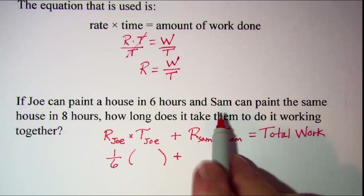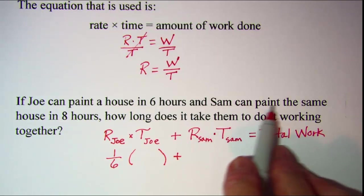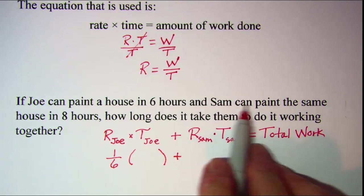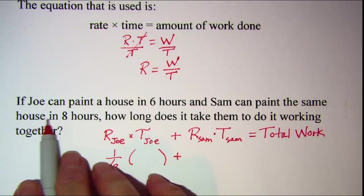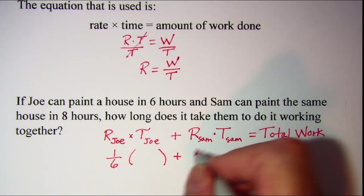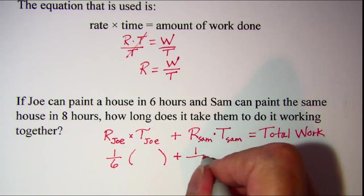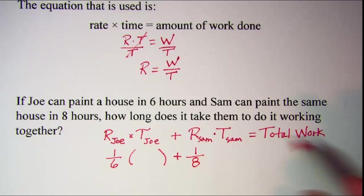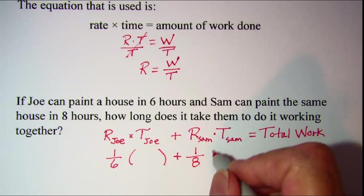Sam's rate, we'll take the second part of this first sentence here. Sam can paint the same house, so one house, in eight hours. So Sam's rate is one house in eight hours or one-eighth of a house per hour, and then we'll multiply that by Sam's time.